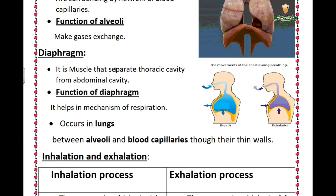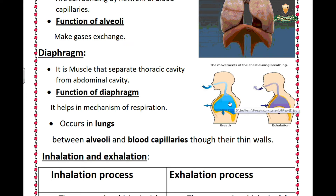The diaphragm is a muscle — it moves up and down. It spreads between two cavities: the thoracic or chest cavity, and the abdominal cavity. The diaphragm separates these two cavities.